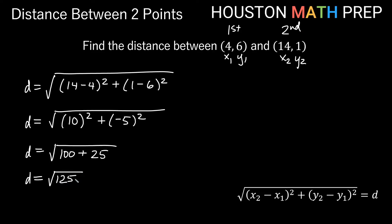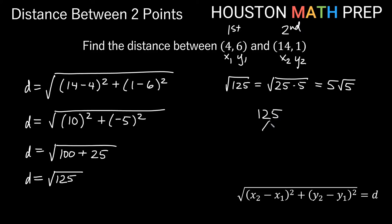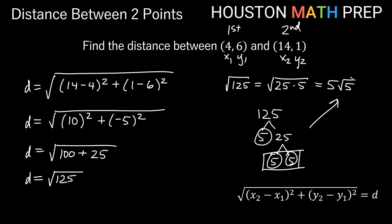Now we can simplify the square root of 125. Using the perfect square method: the square root of 125 equals the square root of 25 times 5, and since we know the square root of 25, we pull that out front to get 5 on the outside and 5 left inside. Using a factor tree gives the same result: a pair of 5s means we pull out a 5, leaving 5 inside. Either way, our distance simplifies to 5 square root 5.